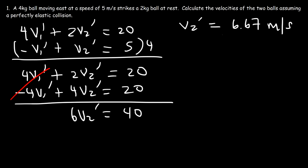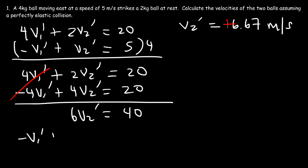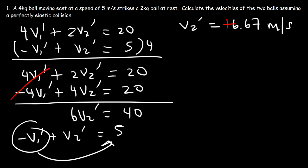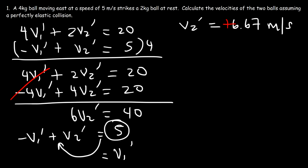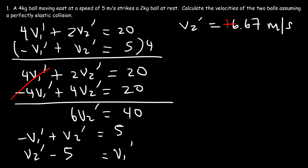Now let's calculate v1'. From the equation -v1' + v2' = 5, we rearrange to get v1' = v2' - 5. So v1' = 6.67 - 5 = 1.67 meters per second.